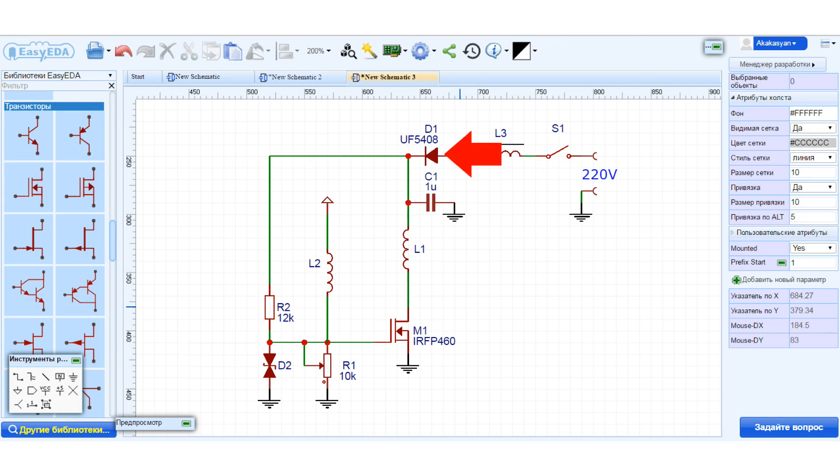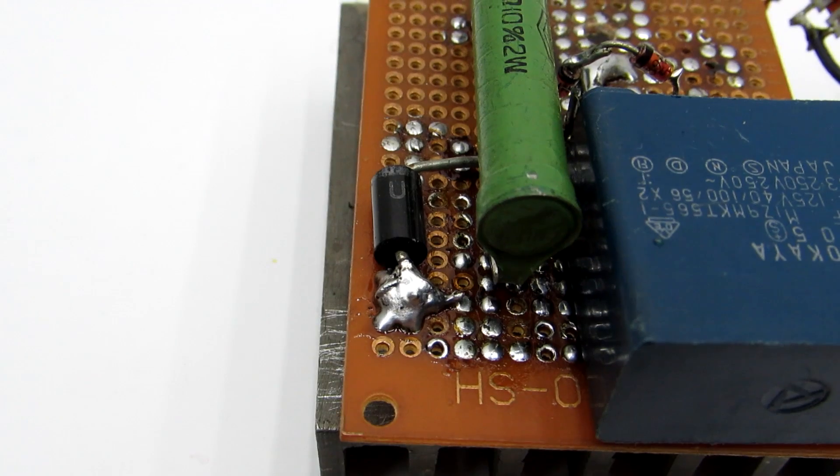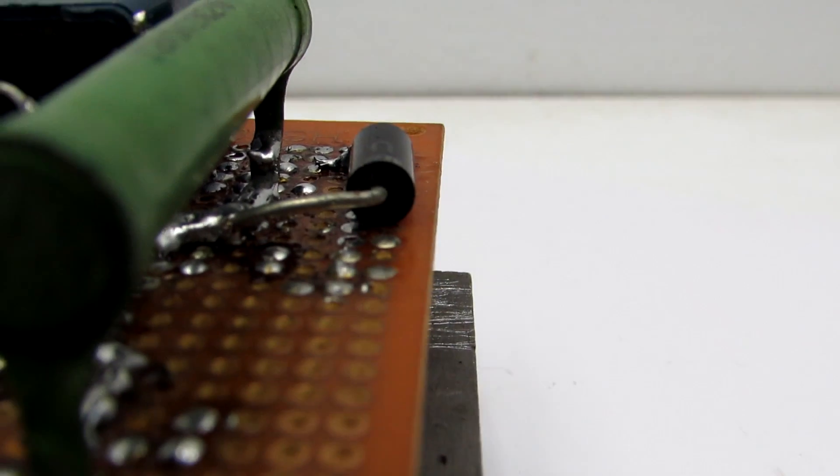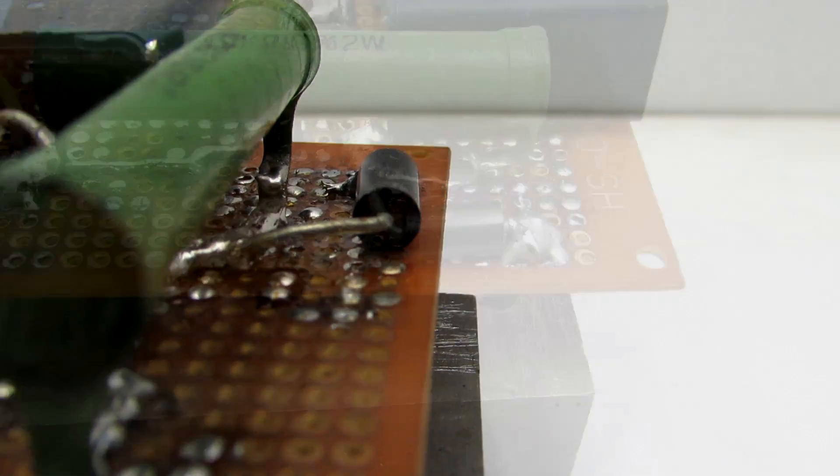Despite the fact that the diode rectifier operates at an awkward frequency, it is better to put a fast diode with a reverse voltage of at least 600 volts. I used UF5408 with three ampere current.